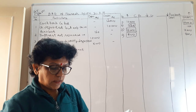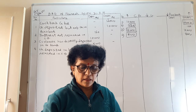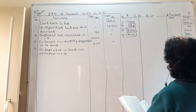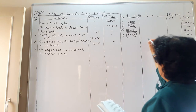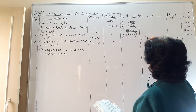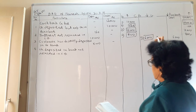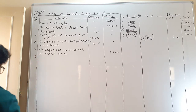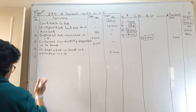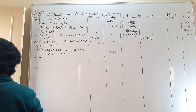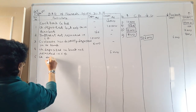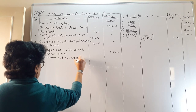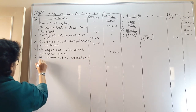Transaction 5: a check drawn and paid by the bank but not recorded in the cash book. The bank has already decreased our balance by 6,000. What is not done is recording it in our cash book. We have forgotten to write it, so we credit 6,000 rupees. Entry: check drawn but not recorded in cash book — credit rupees 6,000.